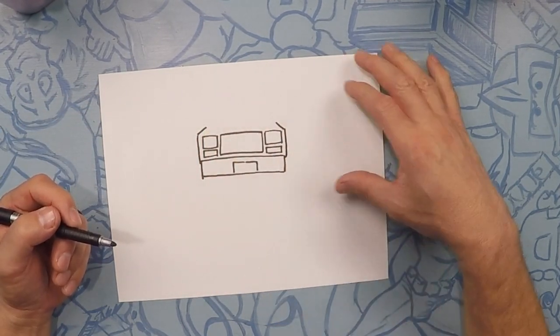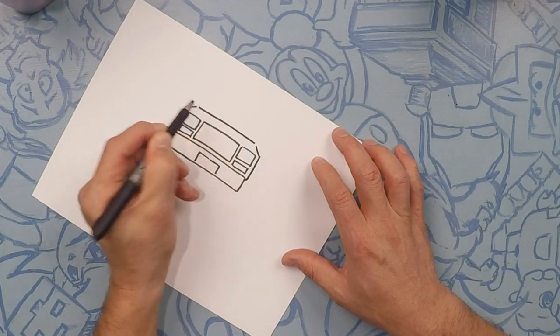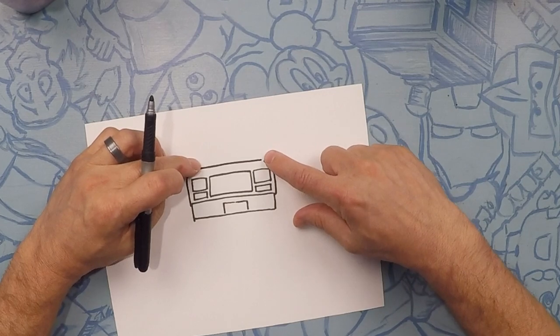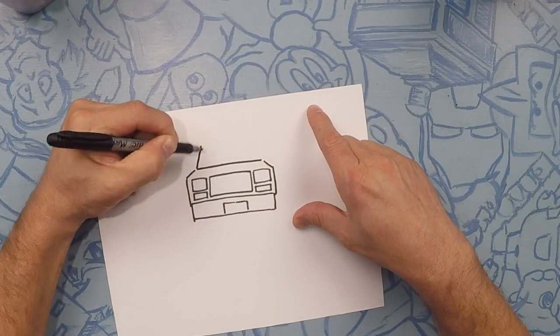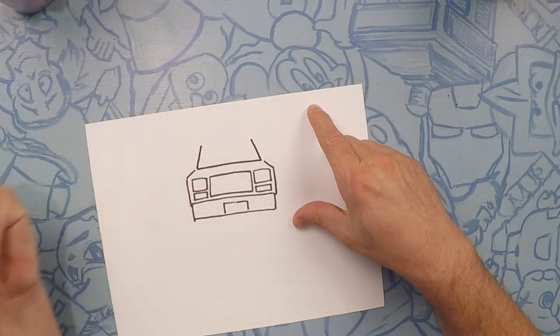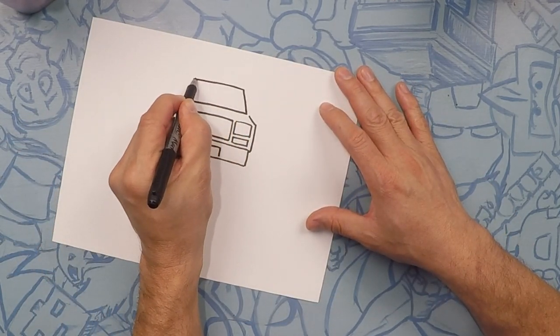So next we're gonna connect this line across. This is the bottom of the windshield. Good job. And now these two lines are gonna go at an angle inwards. And this is the windshield. Just like that. Connect that line. Good.